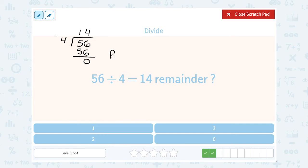So we're left with 0. That means it divides evenly. 56 divided by 4 is exactly 14, or another way to say that is 14 remainder 0.